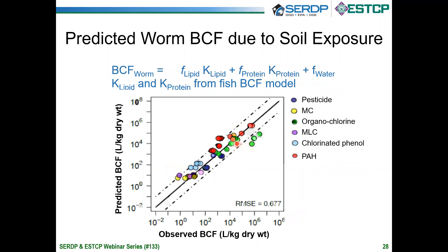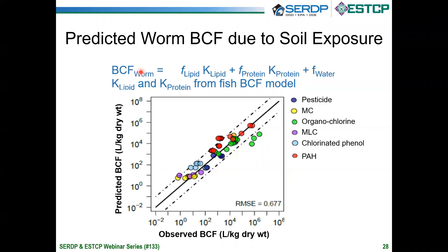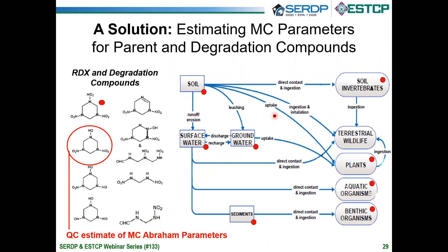Finally, here's the same thing for worms. We did a prediction for bioconcentration in Eisenia and earthworms in contaminated soils, using partition coefficients from a fish bioconcentration model that had never seen any ammunition constituents. We get about the same kind of behavior. So if you need to calculate what's going to happen to a degradation product, you simply calculate the Abraham parameters for the molecular structure. Once you have the solute Abraham parameters, you've got it for all the other phases in which predictions are needed. It is a very efficient method.